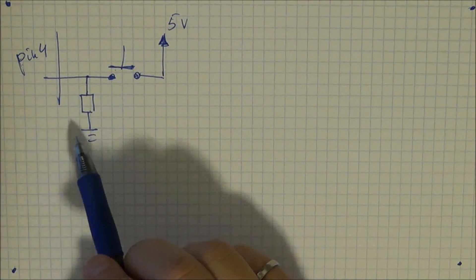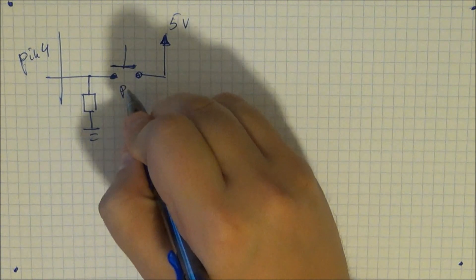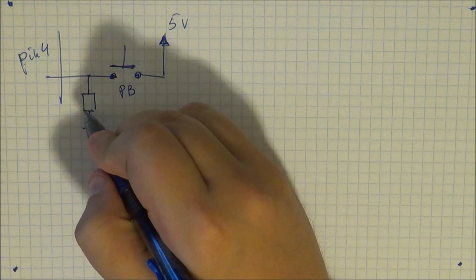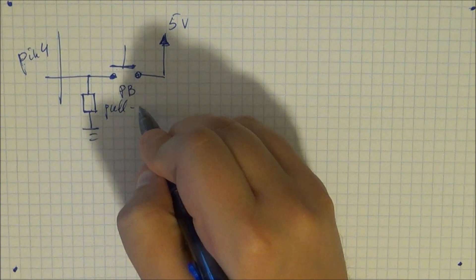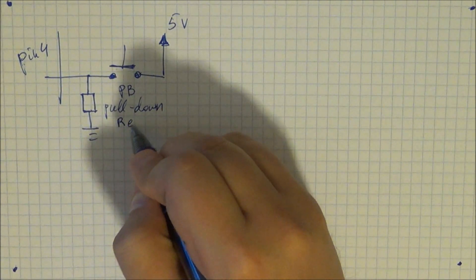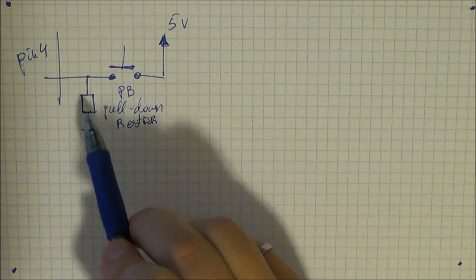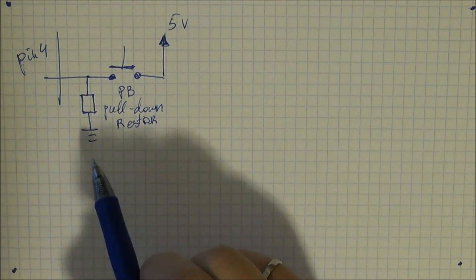Okay, all right. So the last circuit we've connected on pin 4 was a push button as well as a pull down resistor. Okay, so first of all, what is the purpose of this pull down resistor?